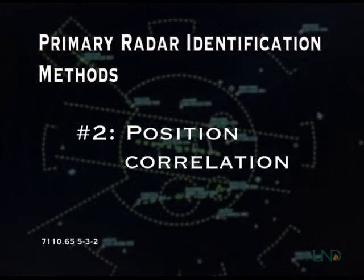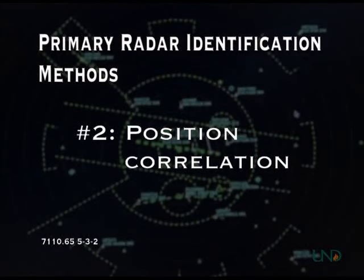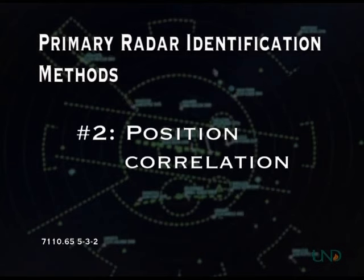The second method is called position correlation. This method involves the pilot reporting his or her position relative to a fixed or visual reporting point, and the controller observing the target at that location in a heading that is consistent with the pilot's reported intentions.